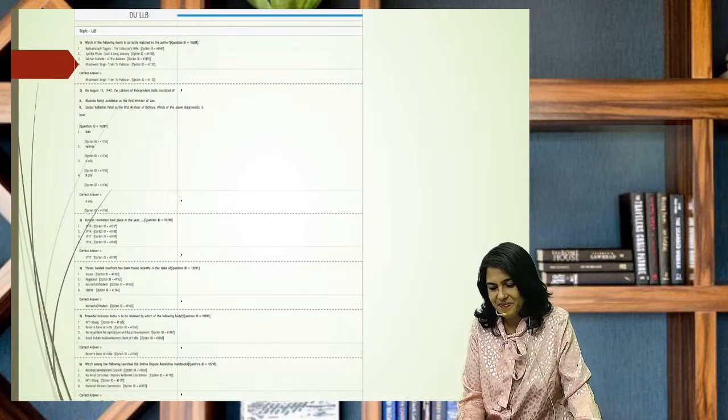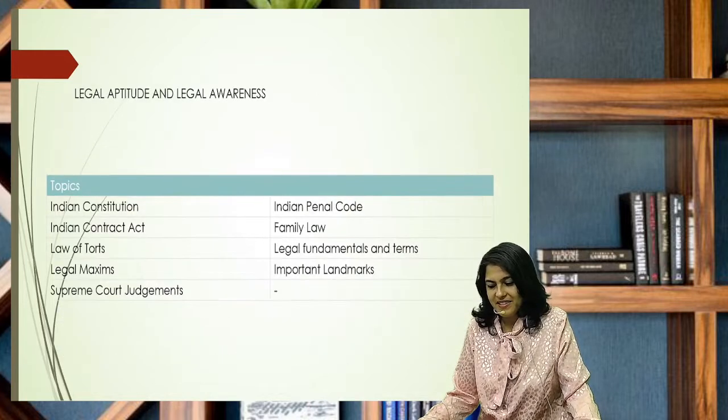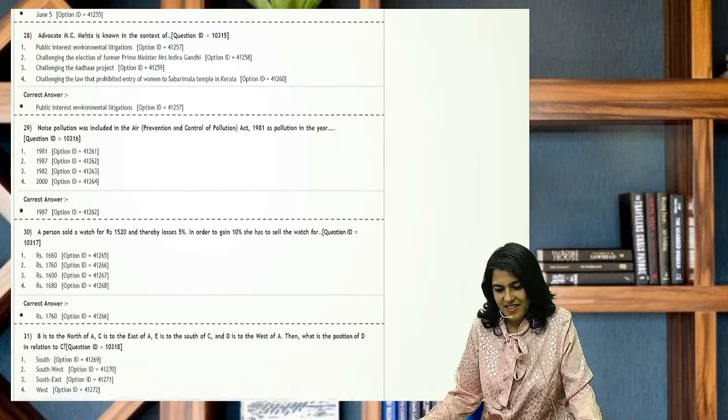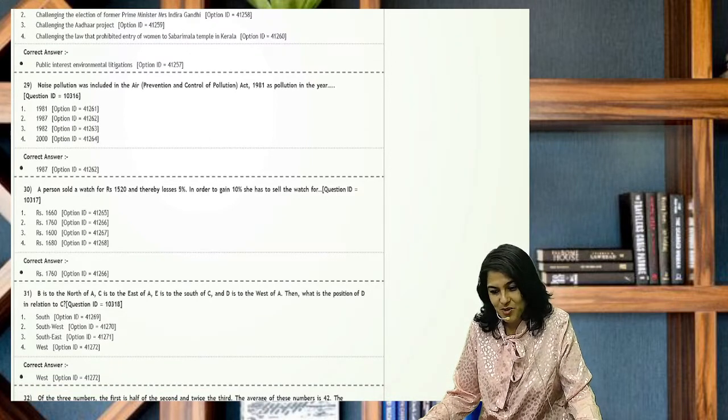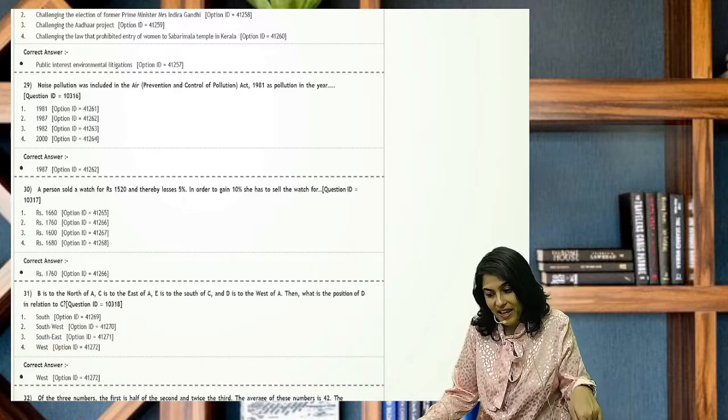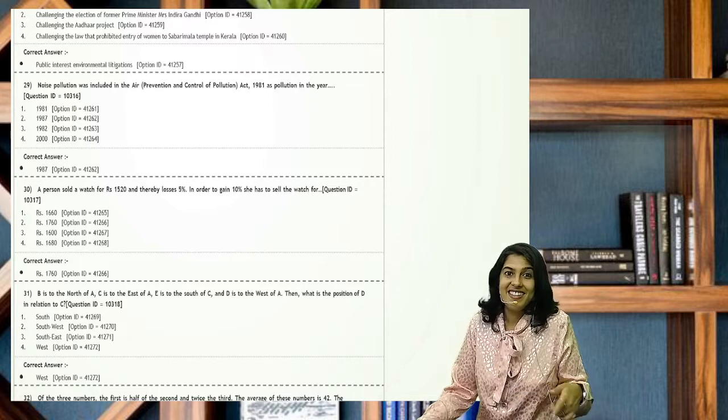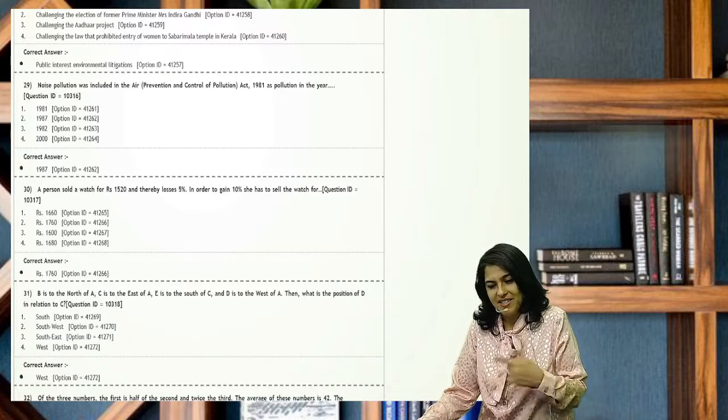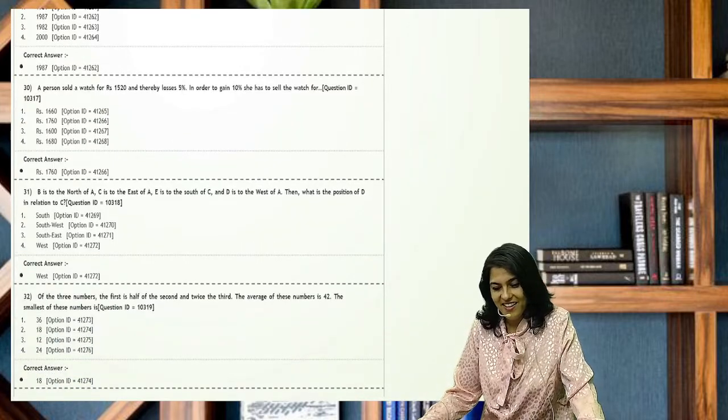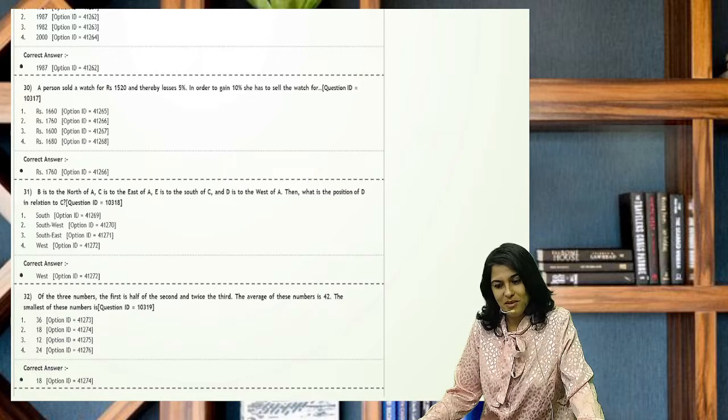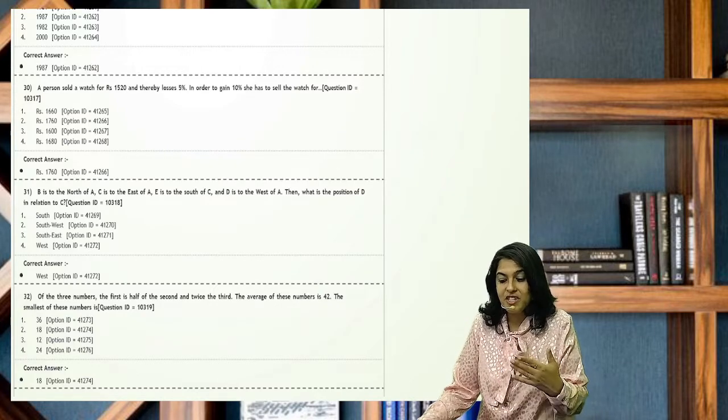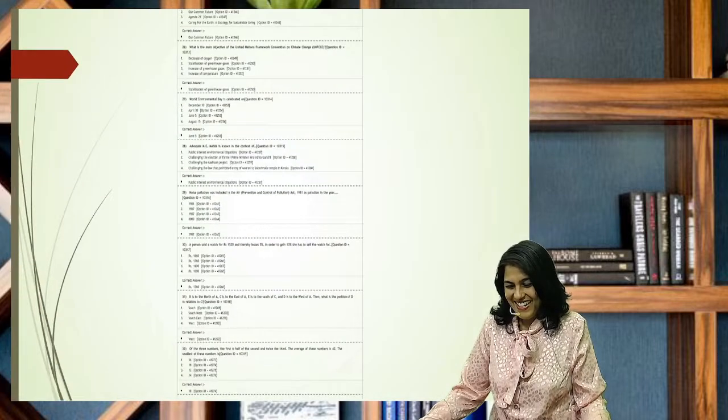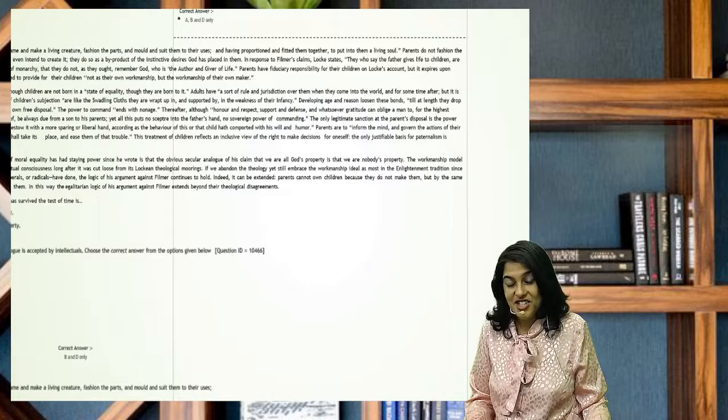Next, let's look at the next part. Check the thirtieth question. A person sold a watch for rupees 1520 and thereby loses 5%. In order to gain 10%, she has to sell the watch for - so again, this is your selling price and cost price, selling price, everything. This, in a way, is a part of math but has been asked here. So you have to do math. Of the three numbers, the first is half of the second and twice the third. The average of these numbers is 42. I'm not trying to scare you, but yeah, you just have to know maths. And because it's in analytical ability, the weightage is not clear how much it will be.